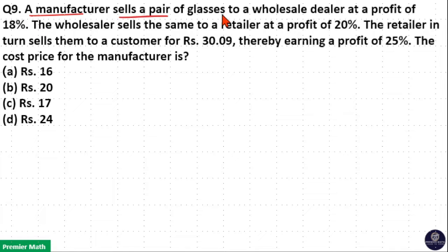A manufacturer sells a pair of glasses to a wholesale dealer at a profit of 18%. The wholesaler sells the same to a retailer at a profit of 20%. The retailer in turn sells them to a customer for Rs 30.09 thereby earning a profit of 25%. The cost price for the manufacturer is: